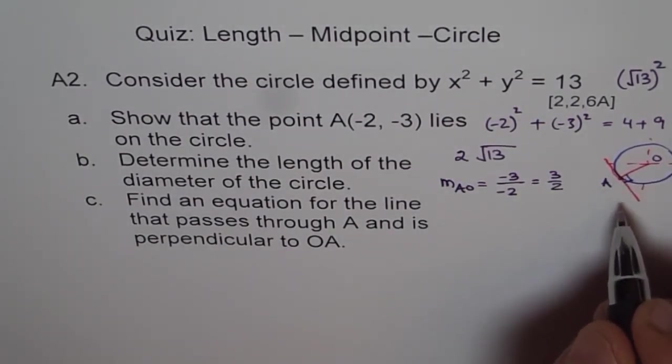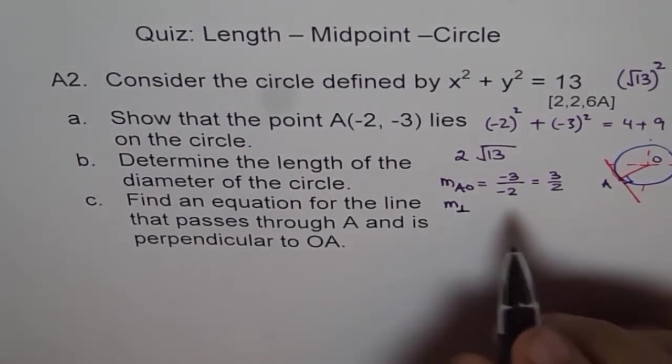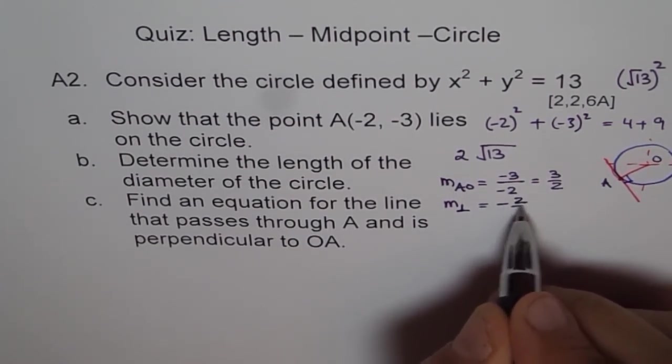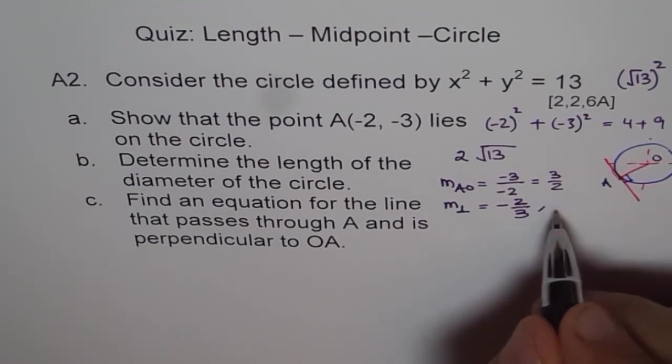So slope of perpendicular line will be, let me write slope of perpendicular like this. Negative reciprocal, that means negative of 2 over 3. So that is the slope, right?